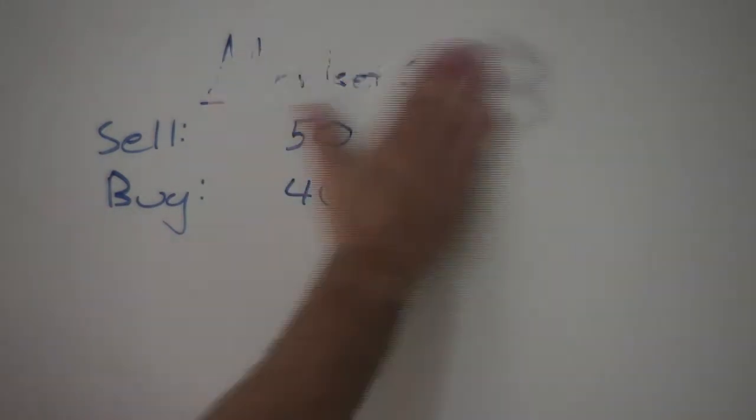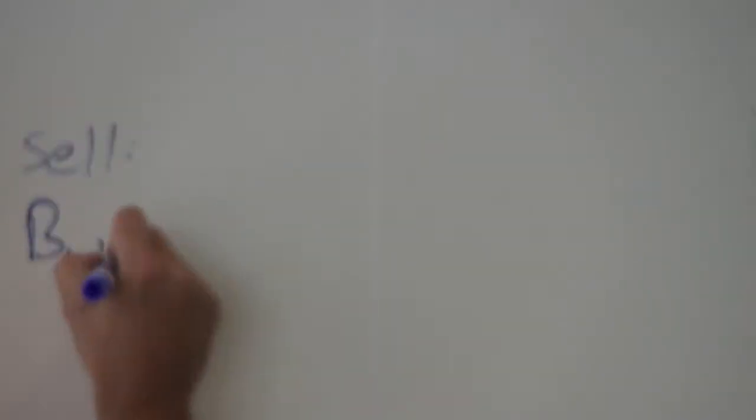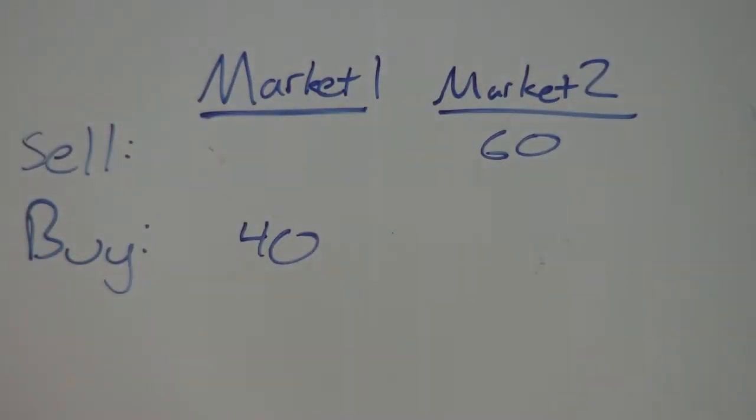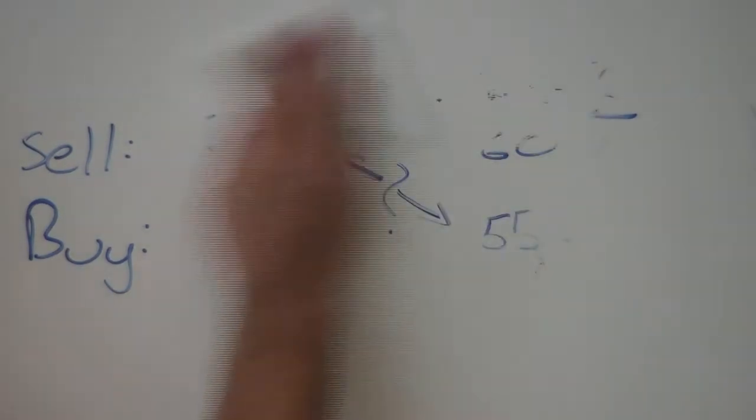But what happens when prices in two separate markets overlap? These two markets seem to be operating normally. Let's say market one receives an order for 50 and market two receives an order for 55. If the agents submitted these trades to the same market, they would trade immediately. So how does this situation get resolved in the real world?